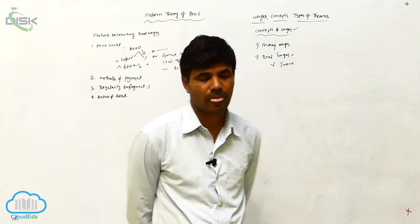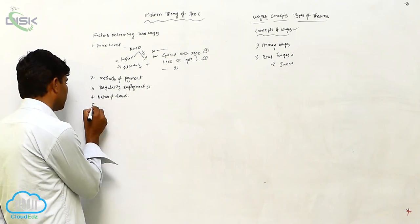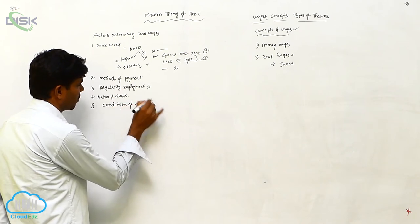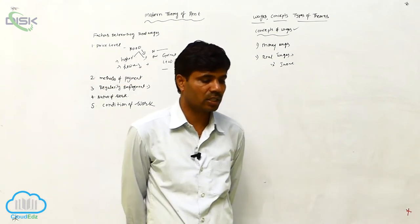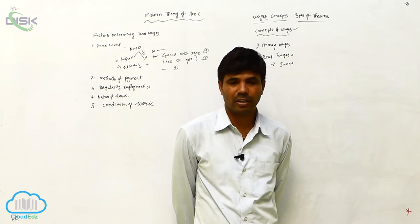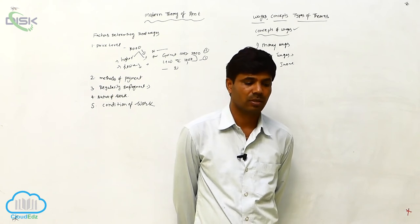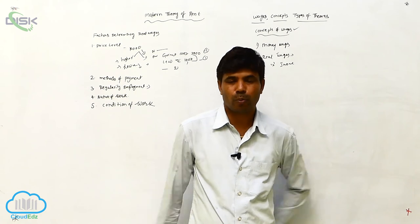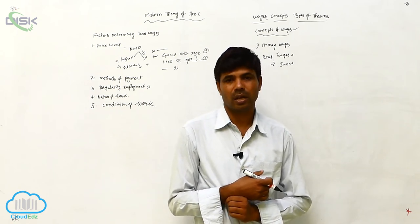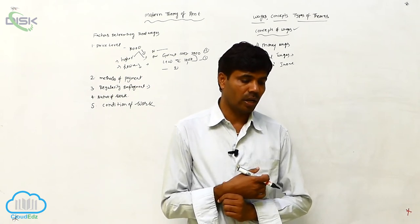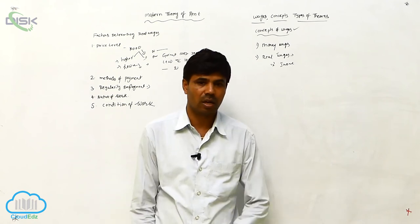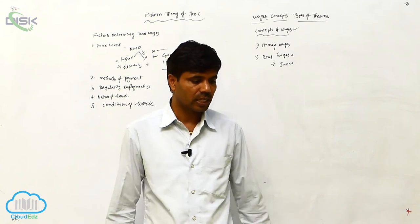The next factor is condition of work. Condition of work determines the real wages of labor. Less duration of work, fresh air, ventilation, and a good atmosphere — providing all these facilities to laborers is the condition of work. When you provide all facilities, results are high and wages are also high. If these facilities are lacking, wages will be very low even if money wages are high.